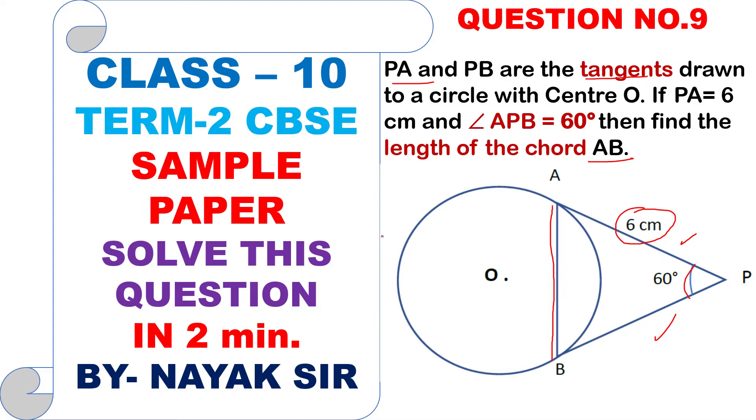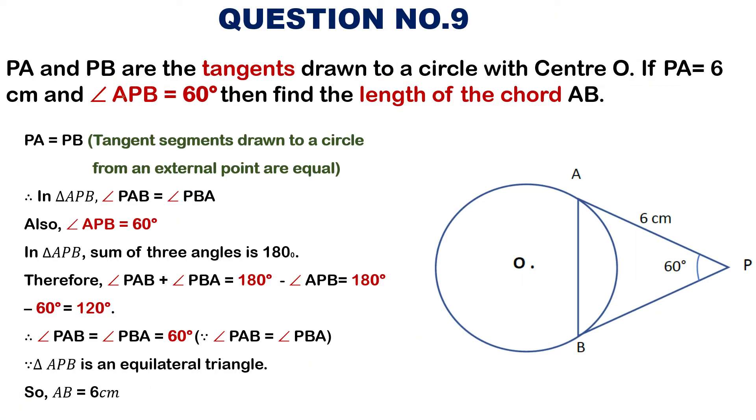So, let's solve the question. You know very well, PA is equal to PB. Why? Tangent segments drawn to a circle from an external point are equal. NCERT says lengths of two tangents are equal from an external point of a circle. If this is 6 centimeter, it will also be 6 centimeter.